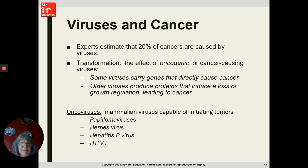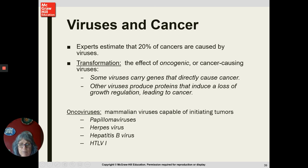Viruses and cancer: about 20% of cancers are estimated to be caused by viruses. These are called oncoviruses. Oncoviruses can cause cancer by either carrying genes that directly induce cancer or producing proteins that disrupt the cell cycle and lead to cancer. Some examples of oncoviruses in mammals are papillomaviruses, herpes virus, hepatitis B, and HTLV-1.